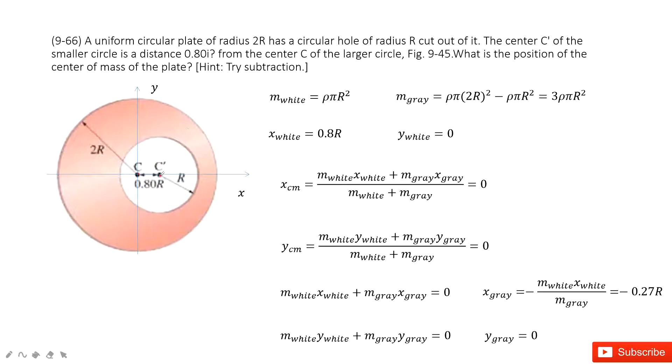This circle, the center of mass is 0.8R, just relative to the center of mass, to the origin, and also the radius is R.